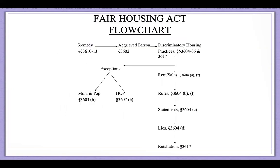Here's a flowchart put together by California lawyer Christopher Rankert. It shows that a remedy is provided to an aggrieved person under the Federal Fair Housing Act for discriminatory housing practices, which come in several different varieties enumerated under the statute's subsections. Pointing to the left, you can see there are some exceptions to Fair Housing Act coverage, which we'll briefly go over as well.